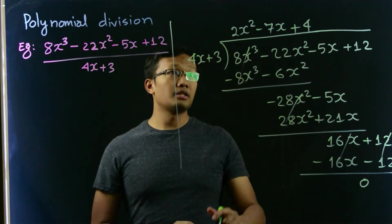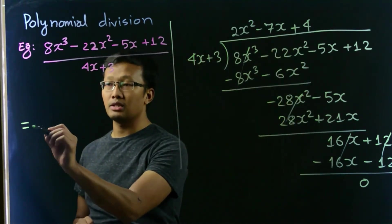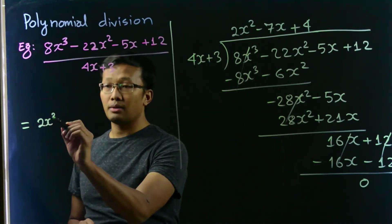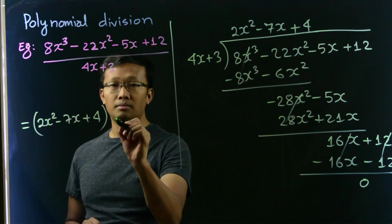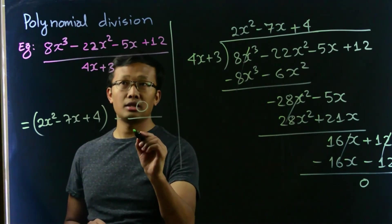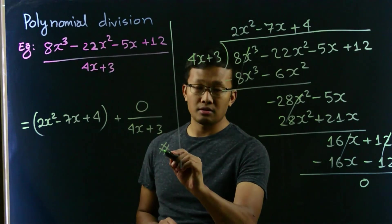So our quotient is 2x squared minus 7x plus 4, and remainder is 0. So we can write this as 2x squared minus 7x plus 4 plus 0 divided by 4x plus 3. So that's our answer. Thank you.